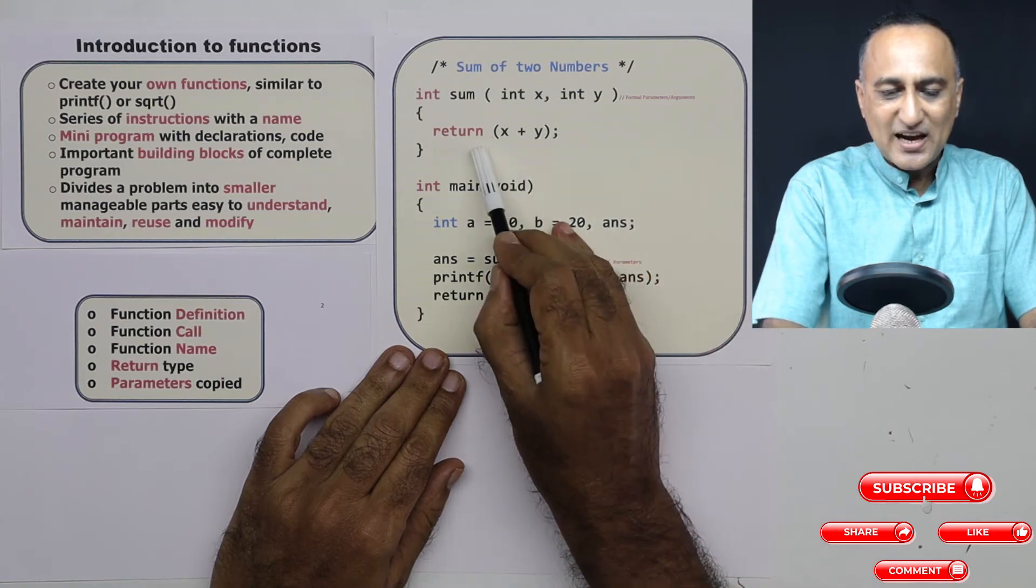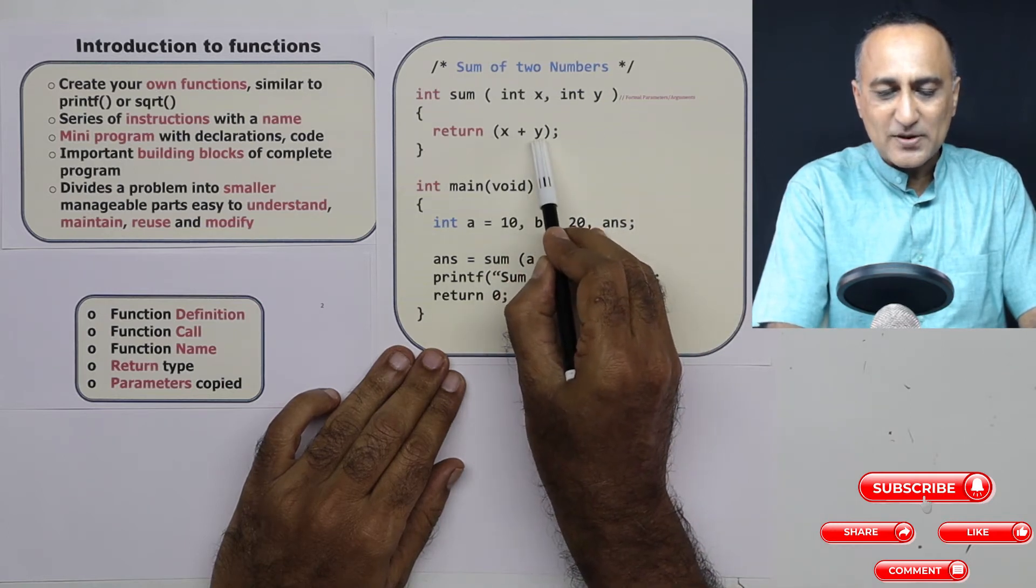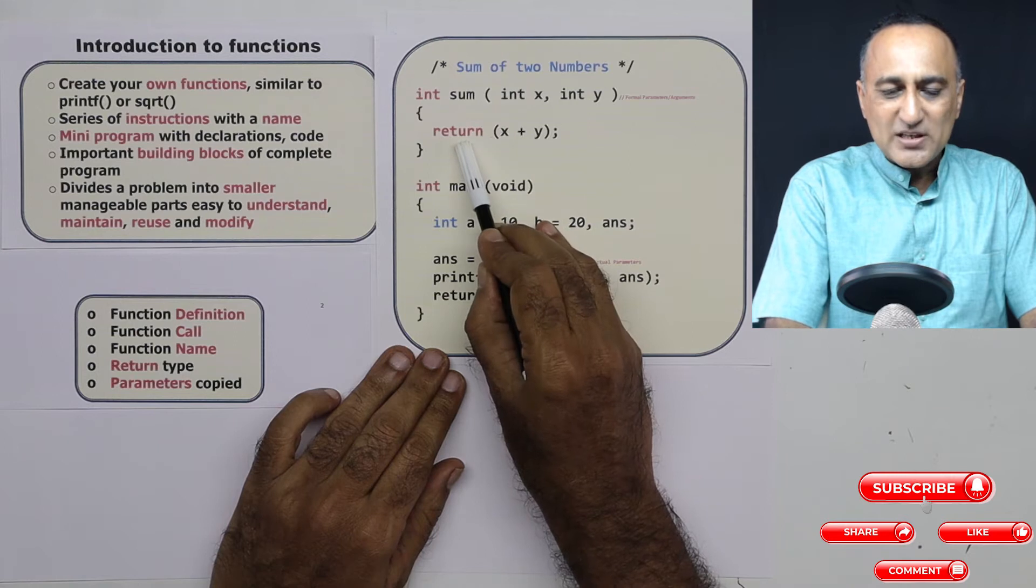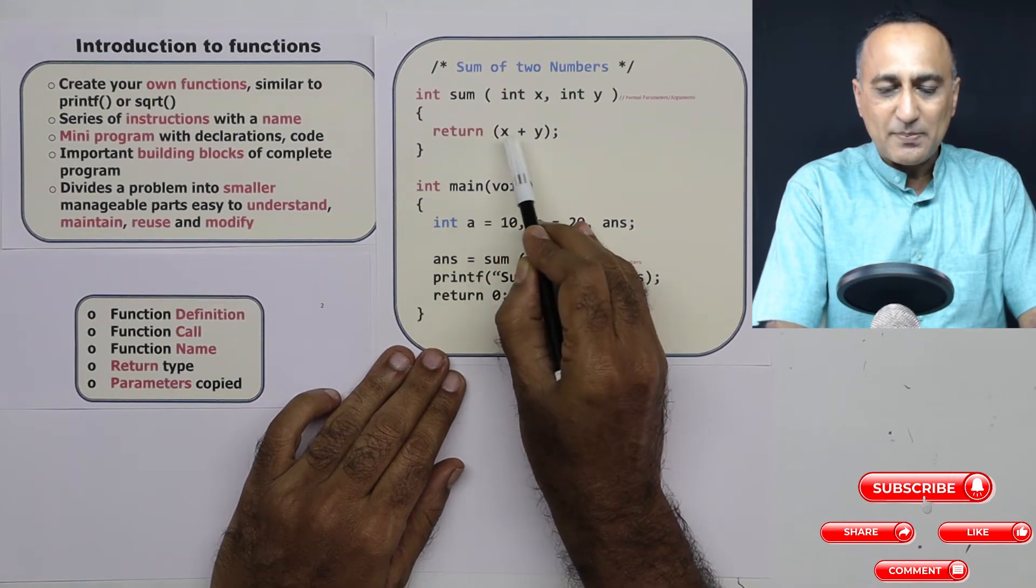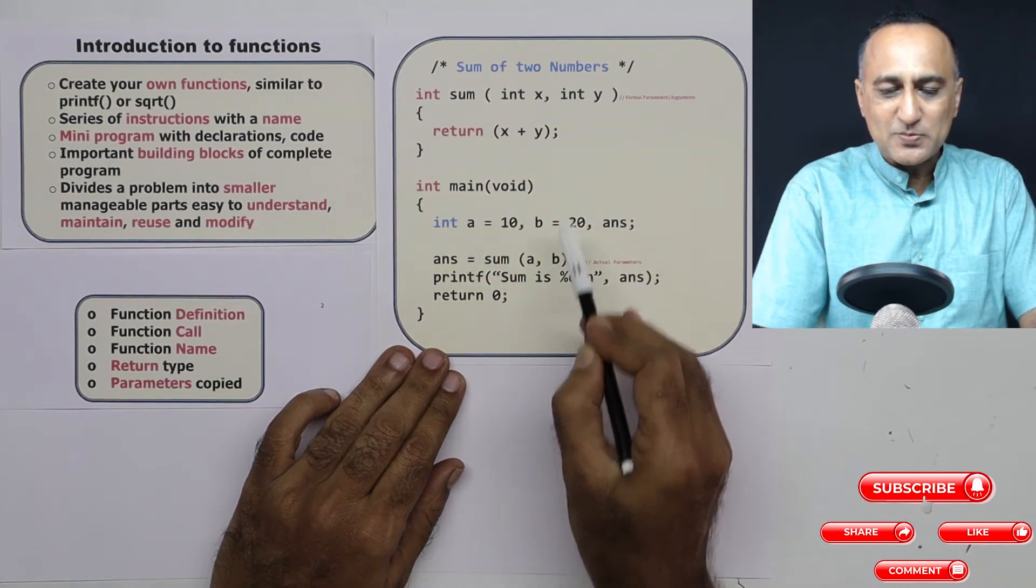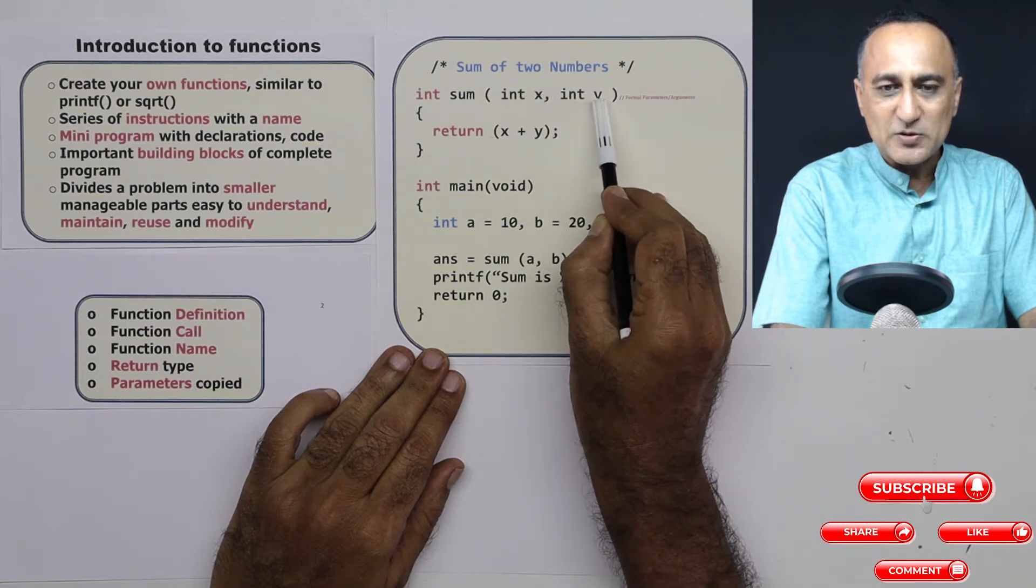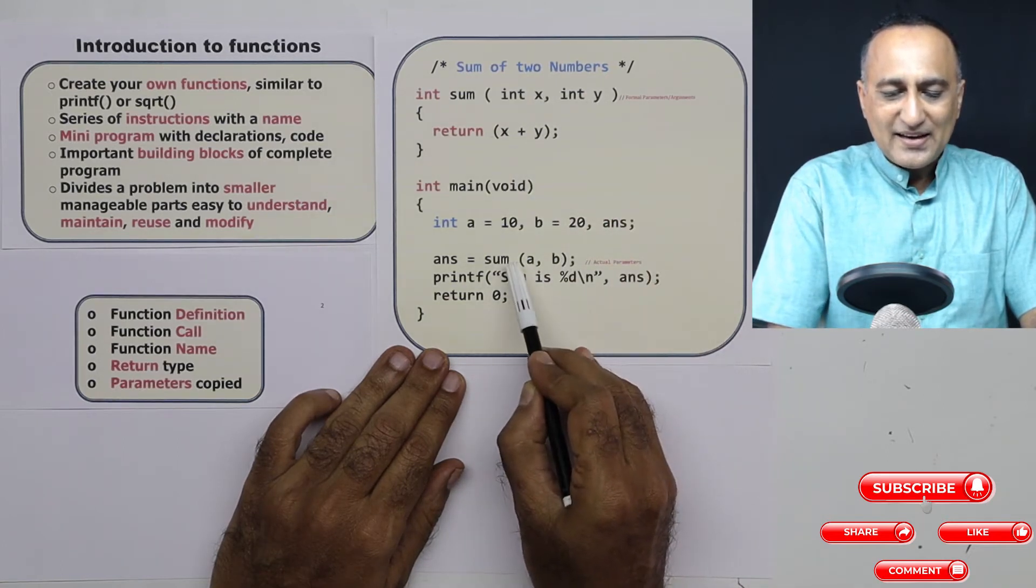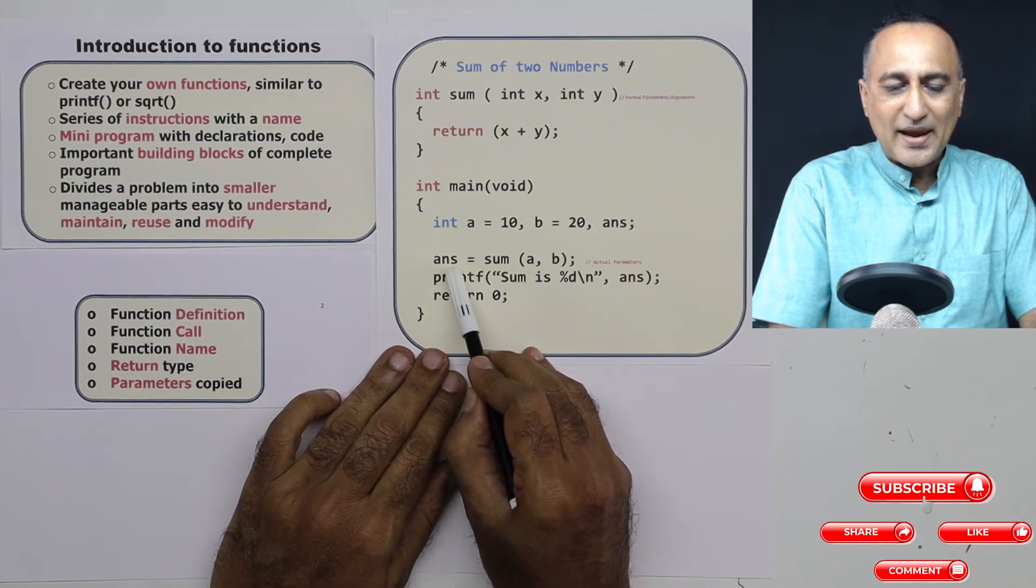Then what I am doing here is I am adding the result of x plus y and using a return statement. So what will happen is the sum of a plus b, which was copied into x and y respectively, will get added and the result will get assigned to answer.